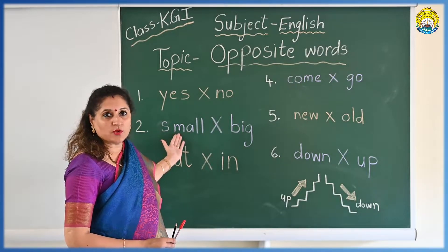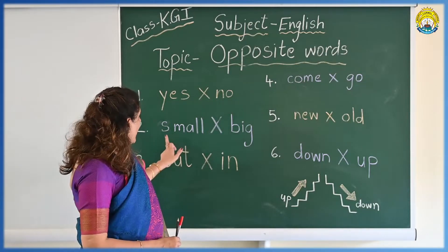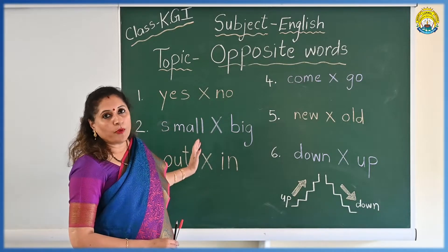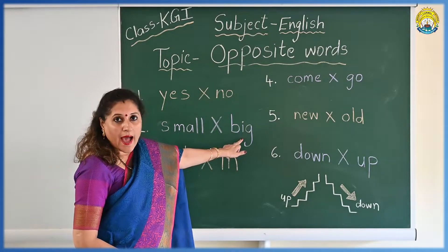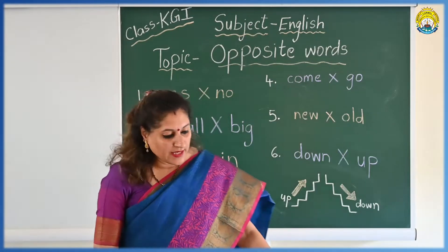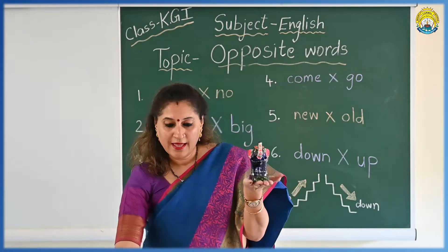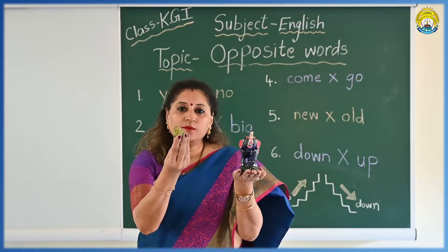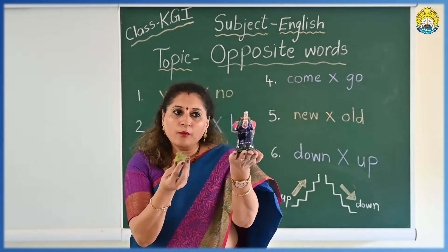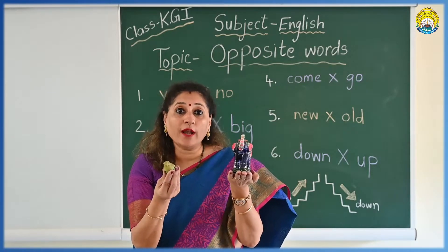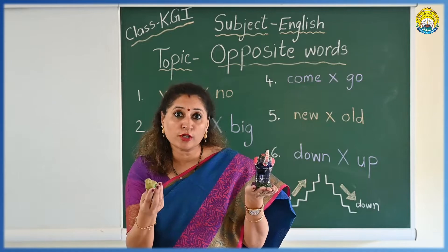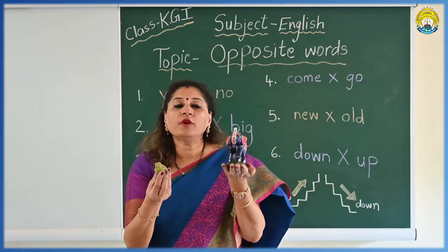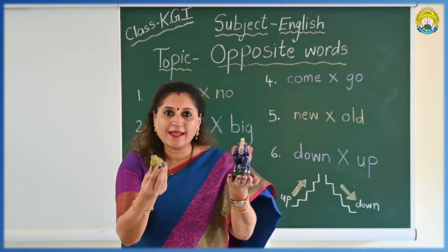Now the next opposite word is small and big. S, M, A, double L — small. Opposite of small is big. B, I, G — big. See children, what is in my hand? An elephant. And in my other hand is a small bird. So the elephant is big and this bird is small — big, small. You must be having a ball at home. So you must be having a big ball and a small ball. The opposite of big is small, or the opposite of small is big.